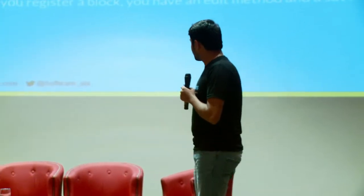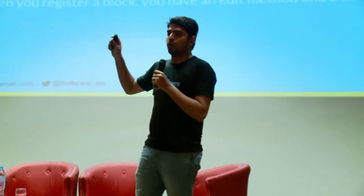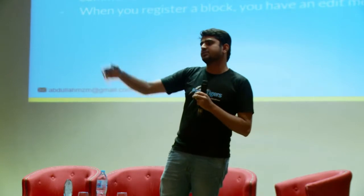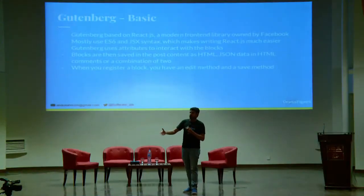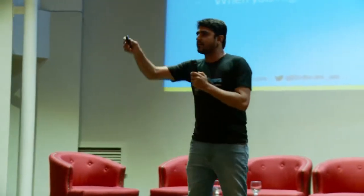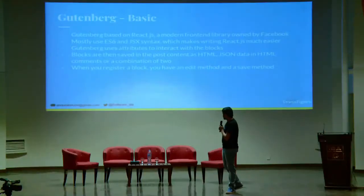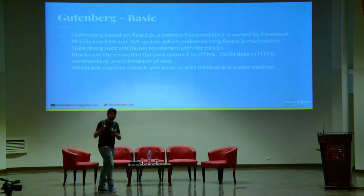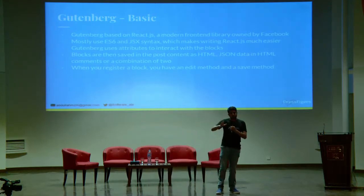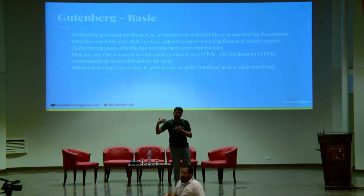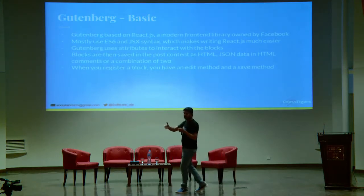Gutenberg uses attributes to interact with the blocks. The Gutenberg block API is designed with attributes — as a WordPress developer, you can see any API like post types, and there are attributes based on which you do all the manipulation and customization. When you register a block, you have an edit method and a save method. There are only two methods: edit and save. The block API is written by the Gutenberg core team, and then you have a simple block ready.